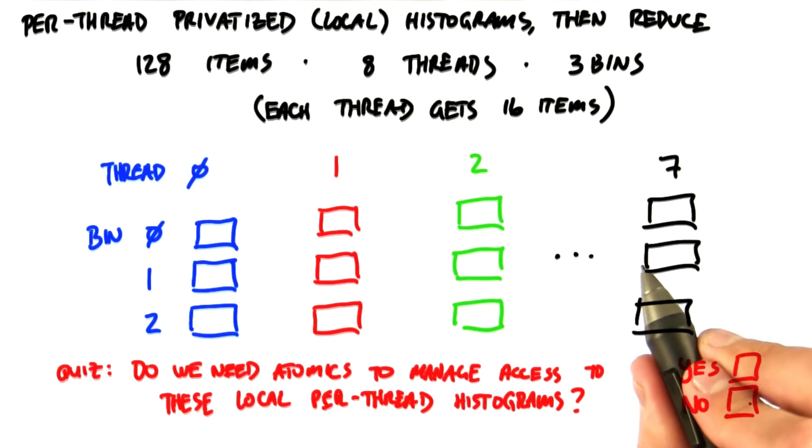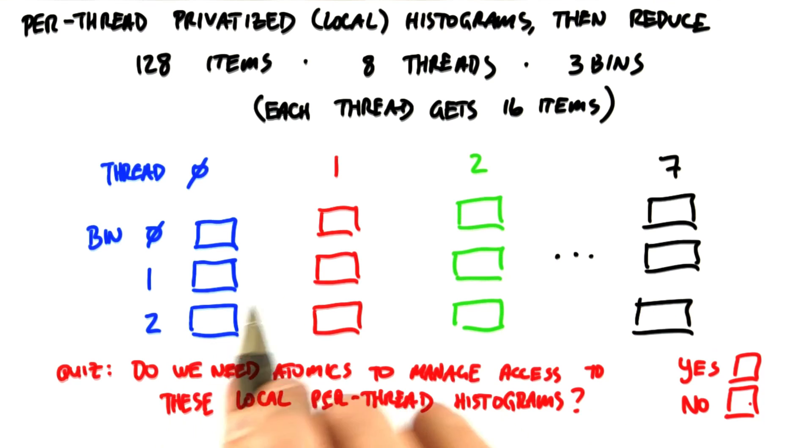Quick quiz: do we need to use atomics to manage access to these local per-thread histograms? Yes or no?